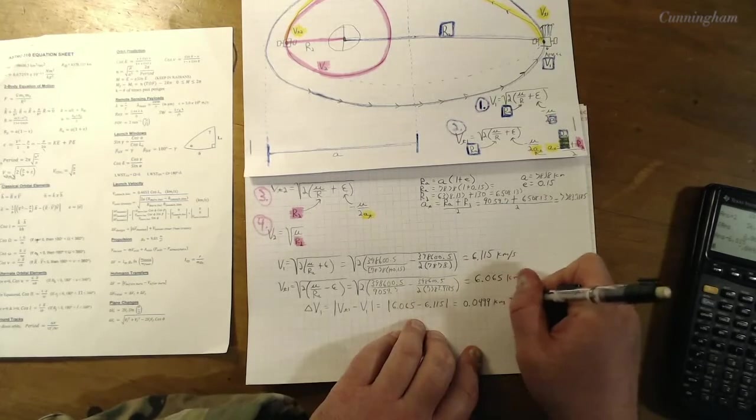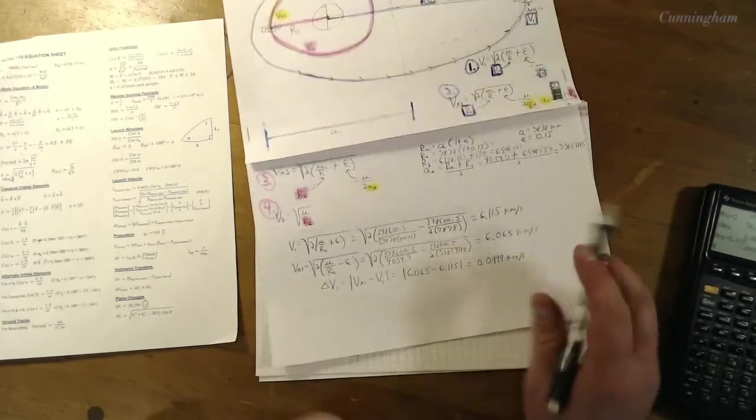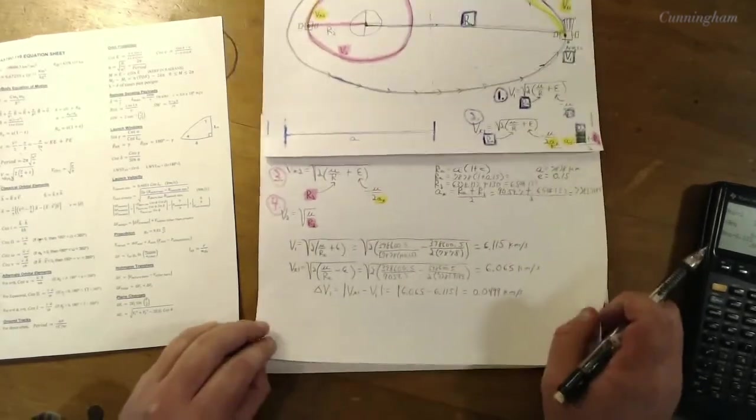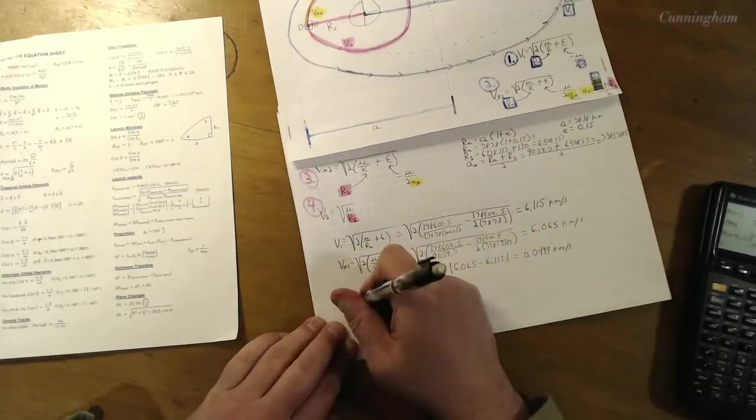So, oh I'm gonna have to go to another sheet of paper. The delta v1, let's do this. Absolute value of the transfer orbit velocity out at the apogee there, right after the burn, minus that initial velocity we found. All righty.